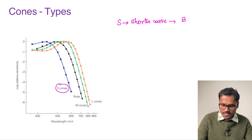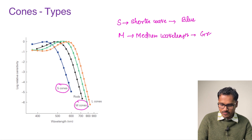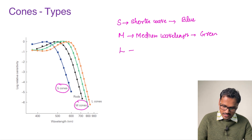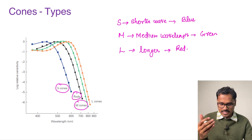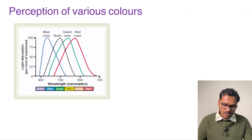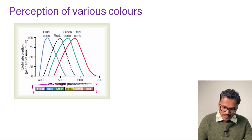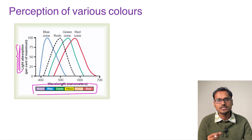S cones are indicated by the color blue. Then there are M cones, which respond to medium wavelength and correspond to the green spectrum of light. The last type is L cones, for longer wavelength, which perceive the red color. The rods fall somewhere in between the S and M cones. So these are the three different types of cones present in the retina.